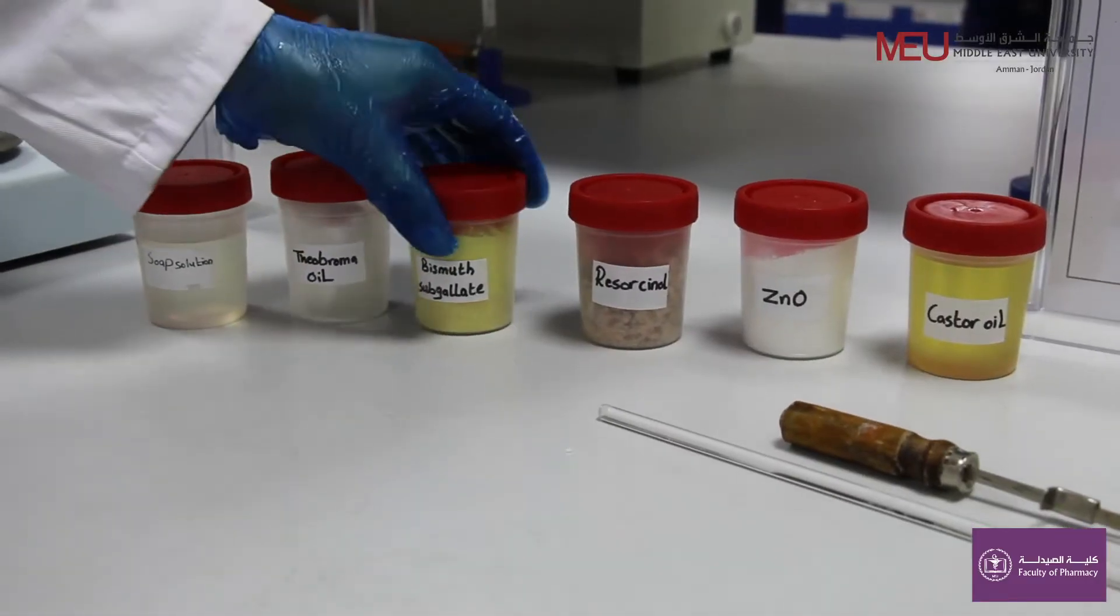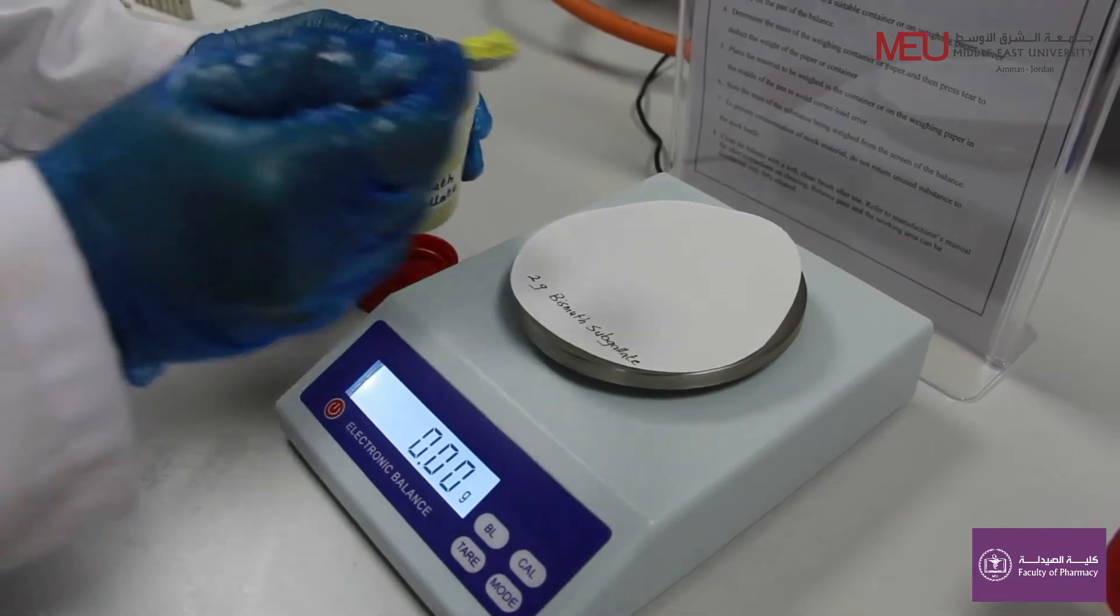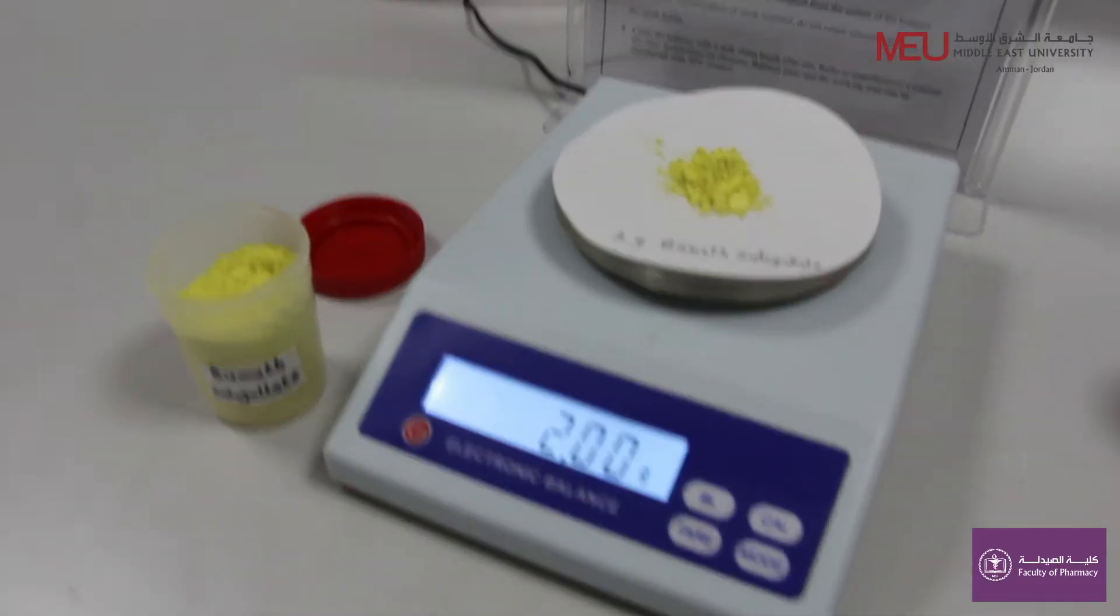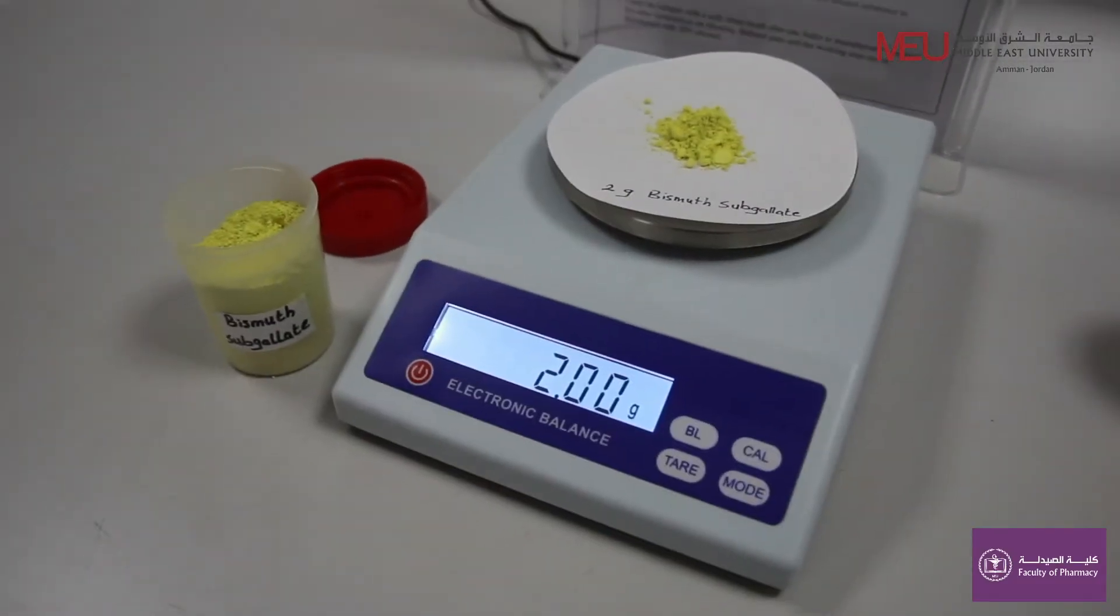Weigh 2 grams of bismuth subgallate. Here, bismuth subgallate is used as an astringent to treat the hemorrhoids.